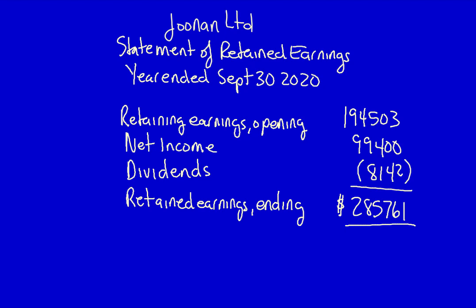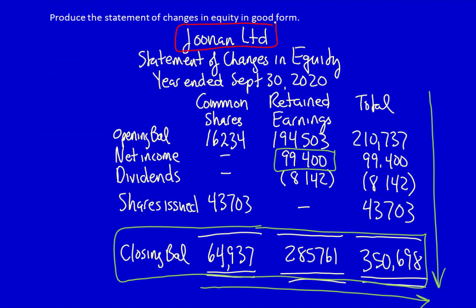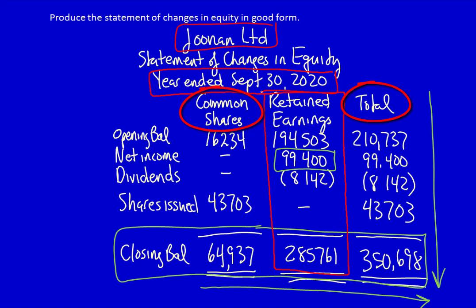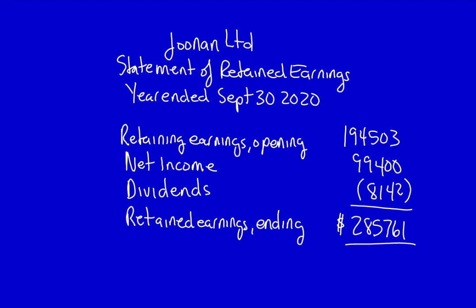The statement of retained earnings is very similar to the statement of changes in equity. Notice the similarities: it's the same name, it's the same date, and it is only the retained earnings column. The statement of changes in equity includes information about contributed capital — in this case common shares — and includes a total. But the statement of retained earnings only includes the retained earnings column. Otherwise, there is no difference between the two statements.